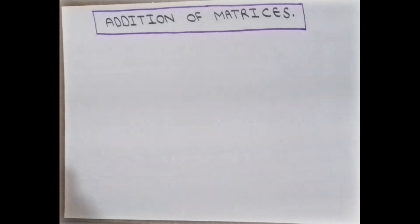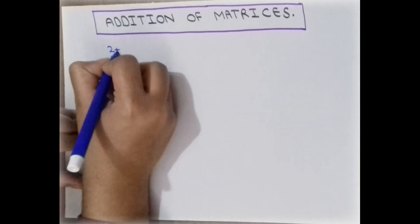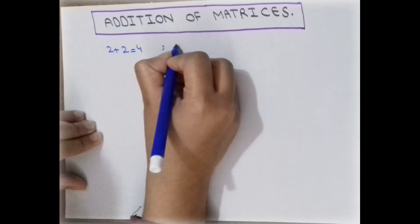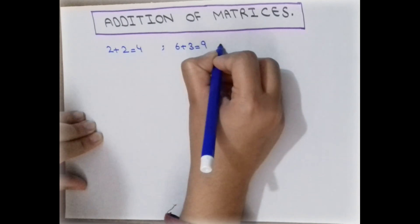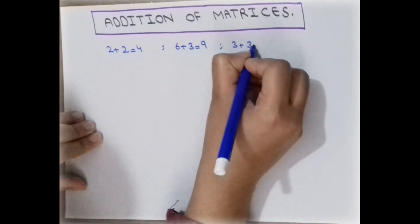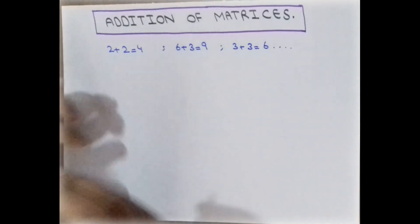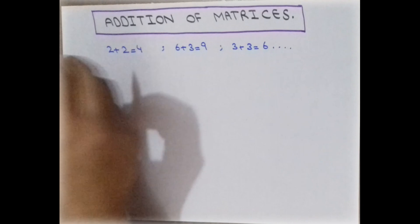Welcome to Math Society. Now we will discuss the addition of matrices. Just as it is easy to add two numbers — for example, 2 plus 2 equals 4, 6 plus 3 equals 9, and 3 plus 3 equals 6 — what about when we add two matrices?